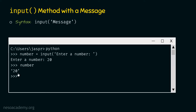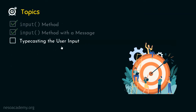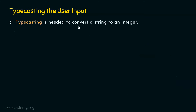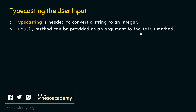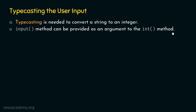This has some problems. It might be possible that later we decide to perform some operations on this value — maybe we decide to add 30 to it. We cannot add an integer to a string in Python; we will get an error in that case. So it is mandatory to convert this value to integer, which means we eventually need to typecast it. This is what the next topic is about: how to typecast the user input.